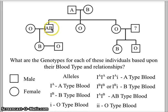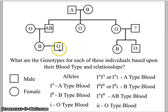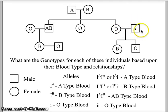We know that the male with A blood marries a female with O blood and they have a daughter with B blood who marries a gentleman with O blood. The daughter on the right side of the pedigree is married, and we don't know her husband's blood type at this time, but we do know she has a daughter with B blood and a son with O blood.